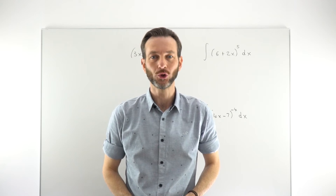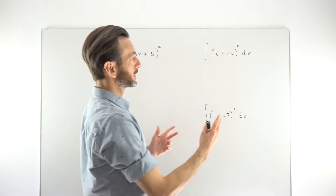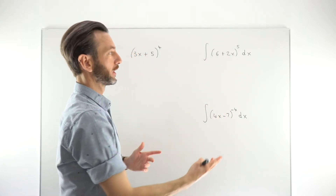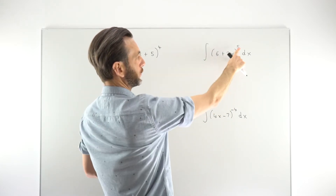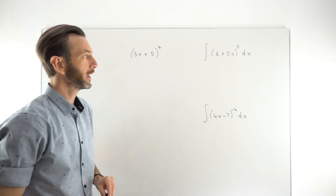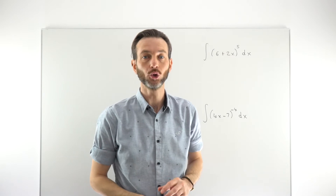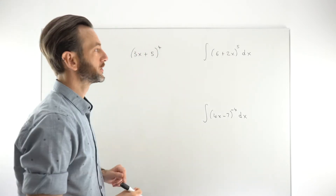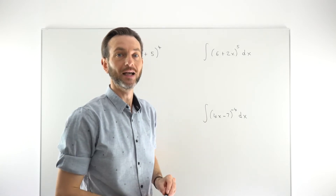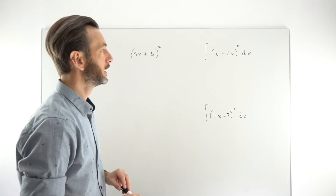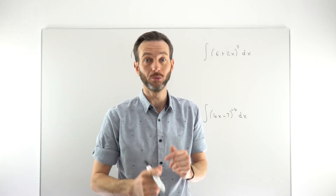In this class we're going to consider the reverse chain rule. This is a technique we can use to evaluate integrals which are in a particular format — essentially a composite function with an internal linear function and an overall exponential function. We already looked at how to solve these in the previous class using integration by substitution. In this class we'll use the same technique but in a more intuitive way, relying on the fact that integrals and derivatives are inverse operations of each other.